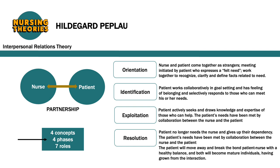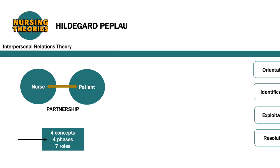In the identification phase, the patient will work in a partnership setting goals and starts feeling part of the process, responding to those who can meet their needs. In the exploitation phase, the patient actively seeks and draws on the knowledge and expertise of those who can help. The patient's needs are met through collaboration between the nurse and the patient. In the last phase, resolution, the patient no longer needs the nurse and gives up their dependency. The patient will move away and break the bond with the nurse, with a healthy balance, and both will become mature individuals having grown from the interaction.